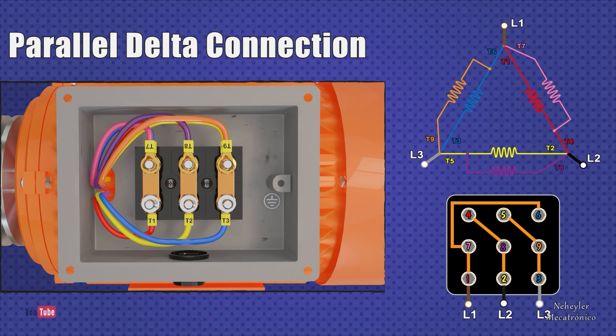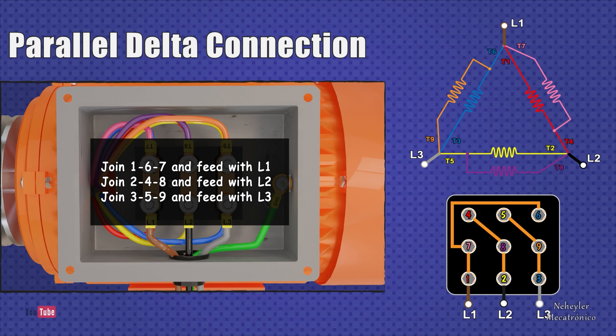Terminals 7, 8, and 9 are connected to Terminals 6, 4, and 5 respectively. The power cables are attached to the first three terminals. In summary, Terminals 1, 6, and 7 must be joined and fed with L1. Join Terminals 2, 4, and 8 and feed with L2. Join Terminals 3, 5, and 9 and feed with L3.